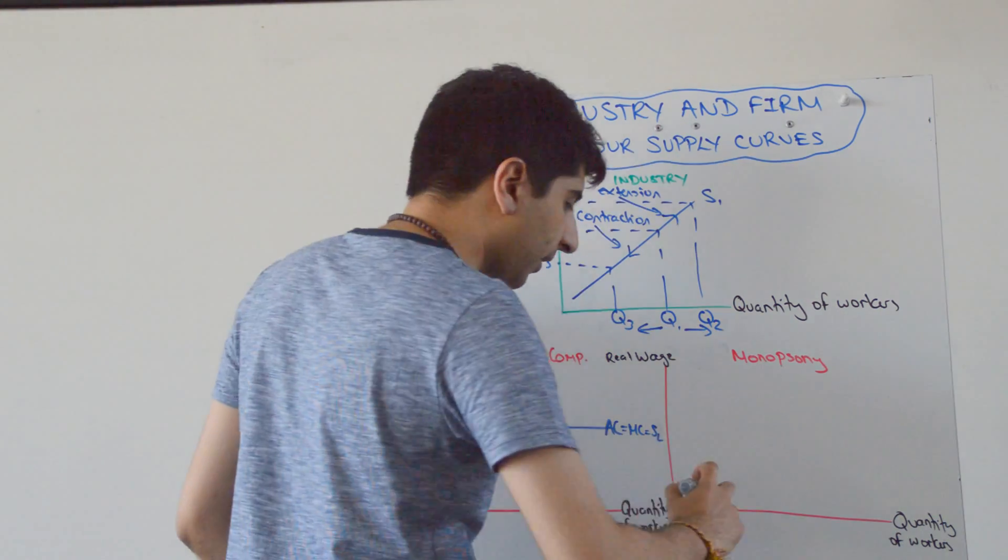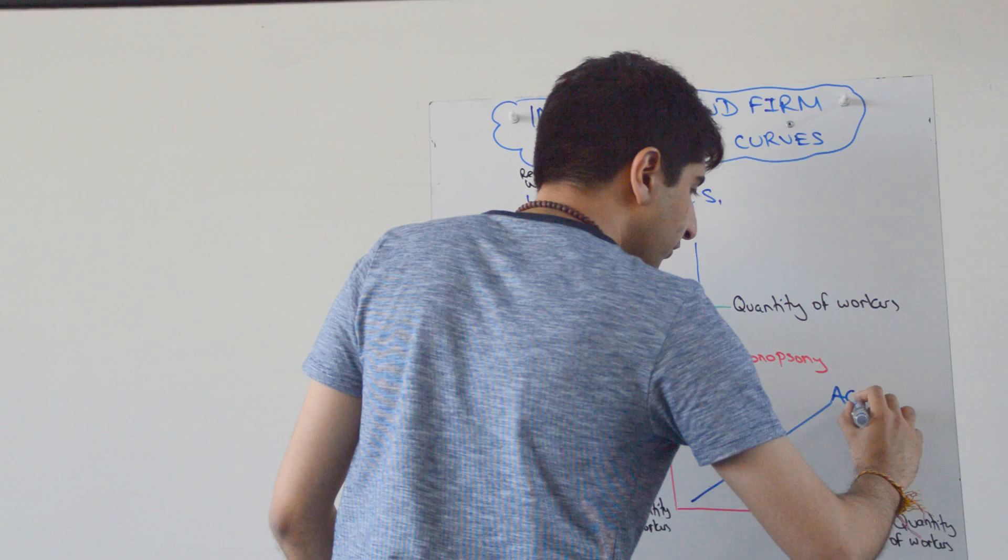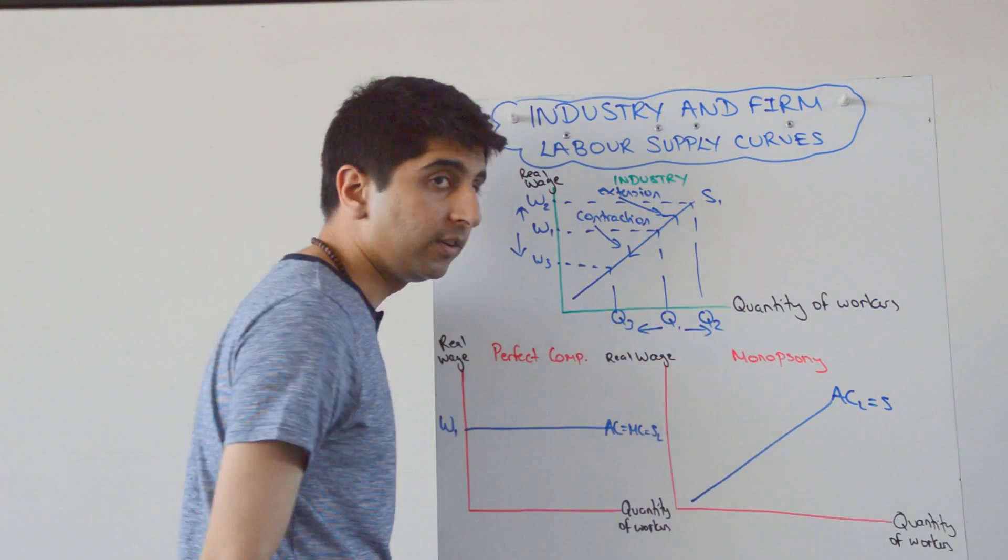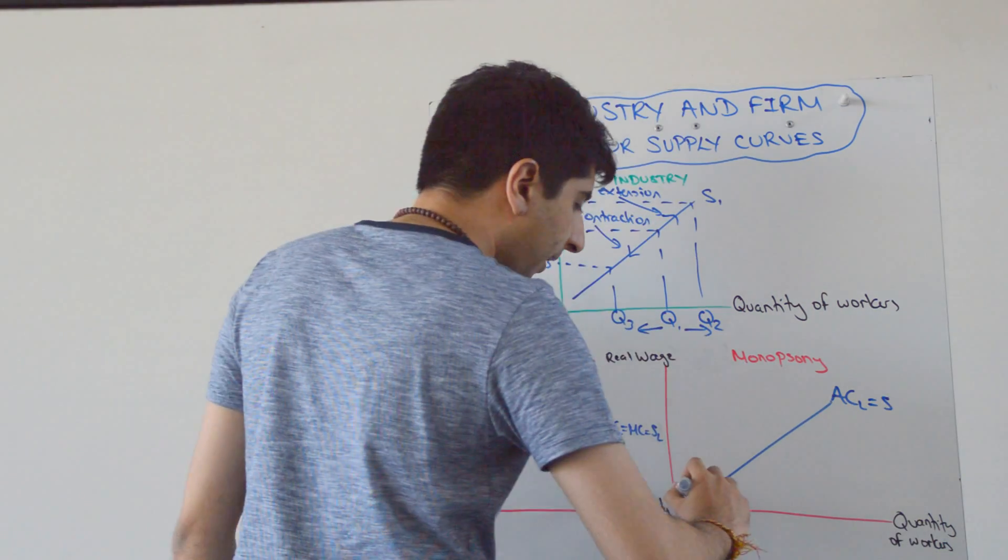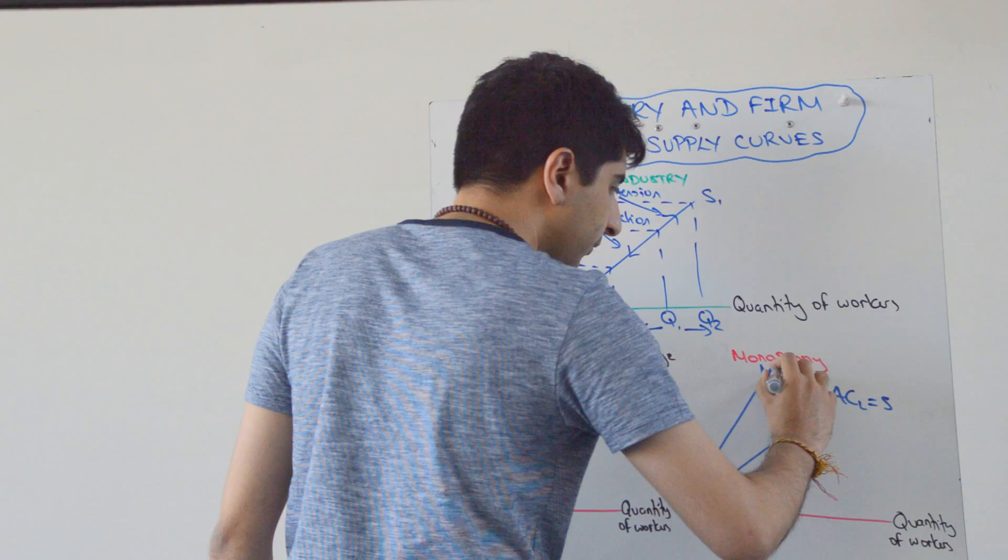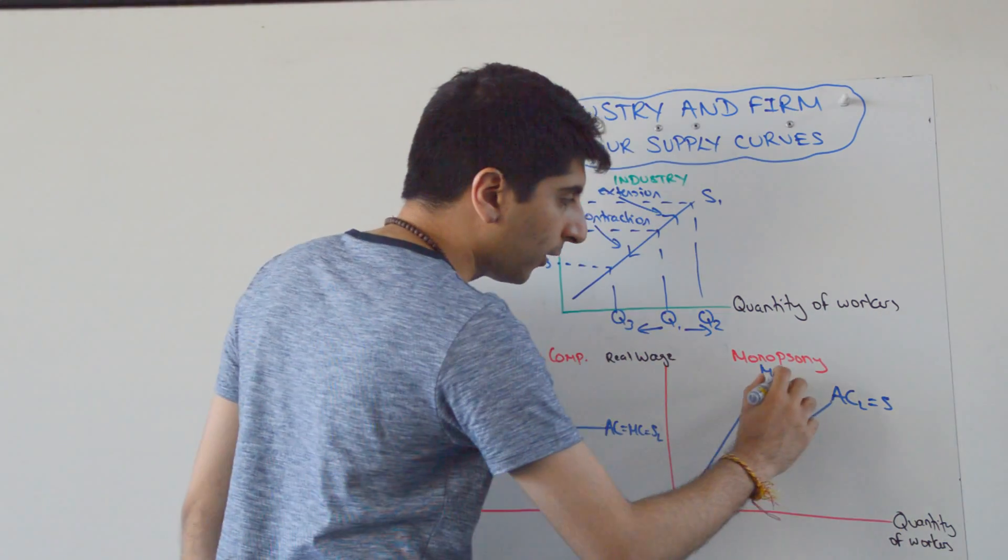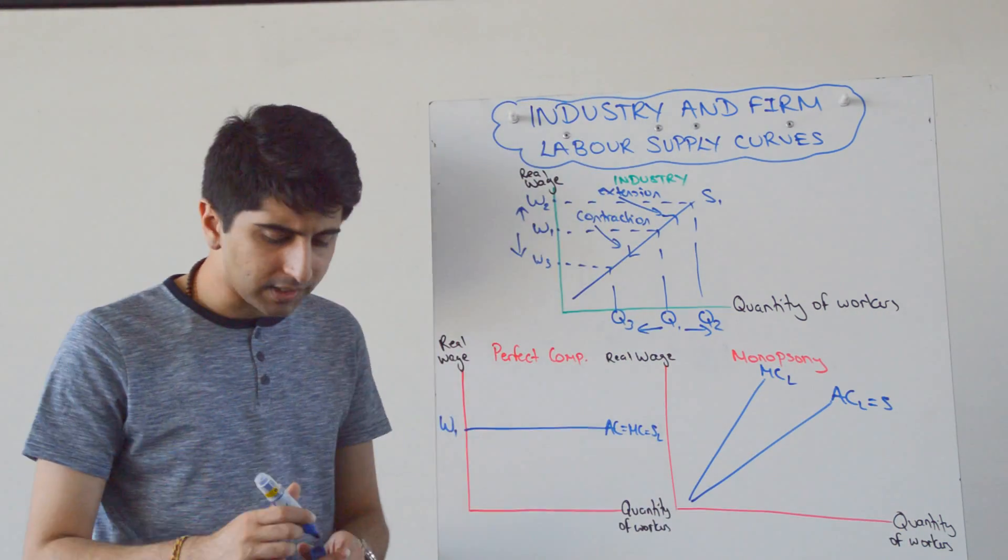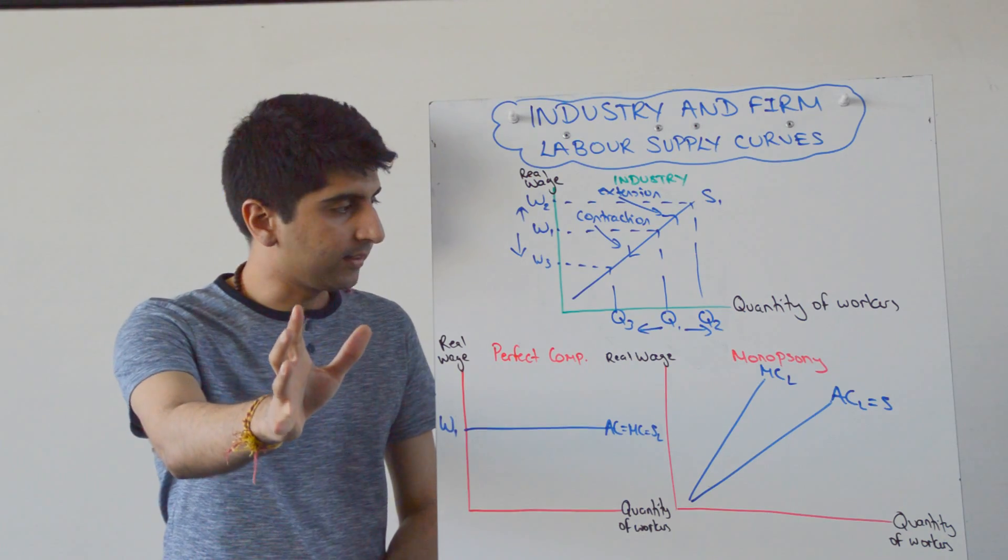So their supply curve is going to be upward sloping like this. So they have an average cost of labour, which is their supply curve, but they have a marginal cost curve, which is twice as steep, but also upward sloping. Now, the way to think of it is like this, guys.